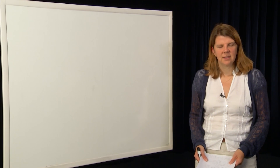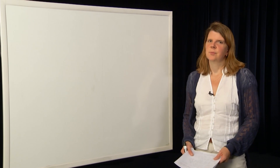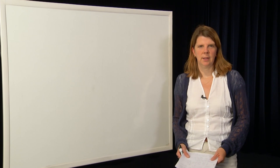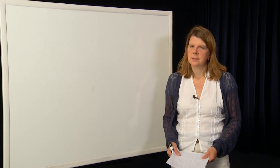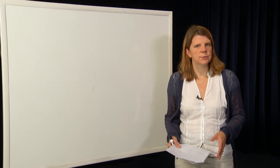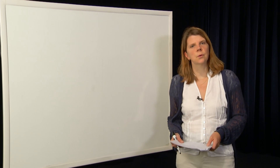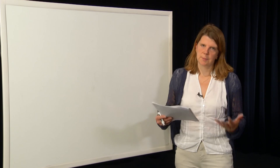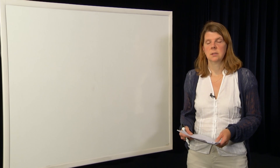My name is Claire Tomlin, and this is Module 7 of a series of modules for the course EECS 221a at Berkeley, Linear System Theory. In this module, we're going to introduce the concepts of norms and normed vector spaces. We've talked about vector spaces, and we've talked about maps between vector spaces.